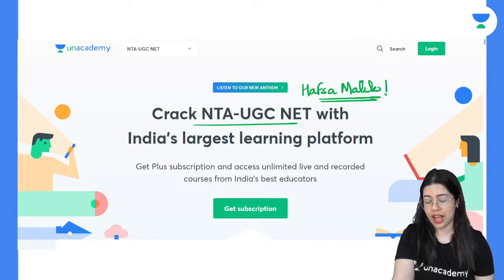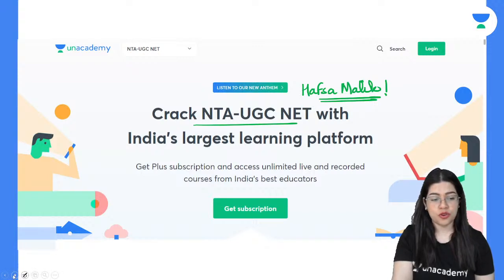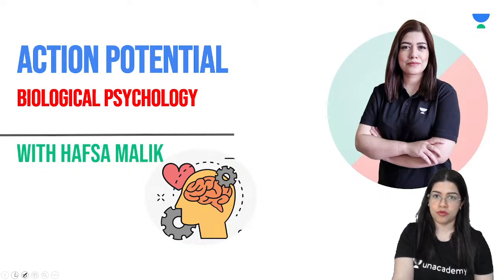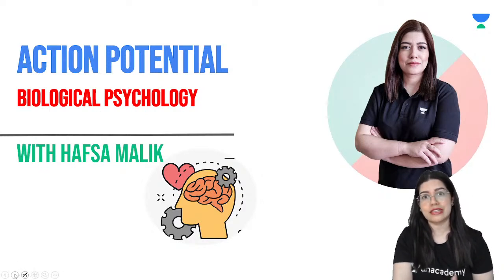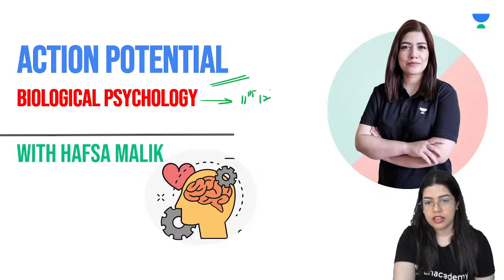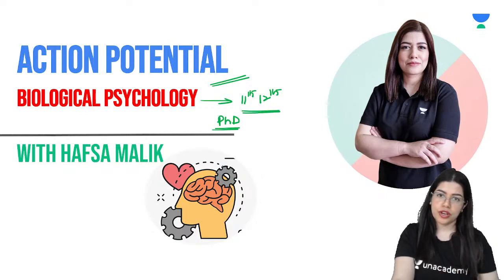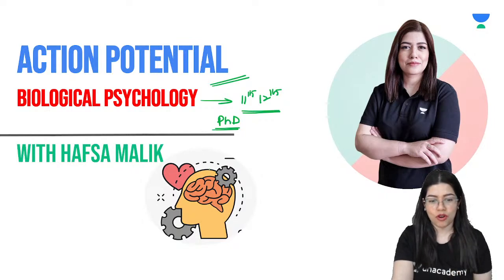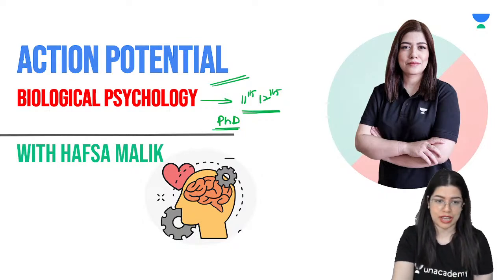So today we shall learn about action potentials. Earlier we studied about neurons and types of neurons and what they do. Now we will take it a step further. How do these neurons within themselves communicate?